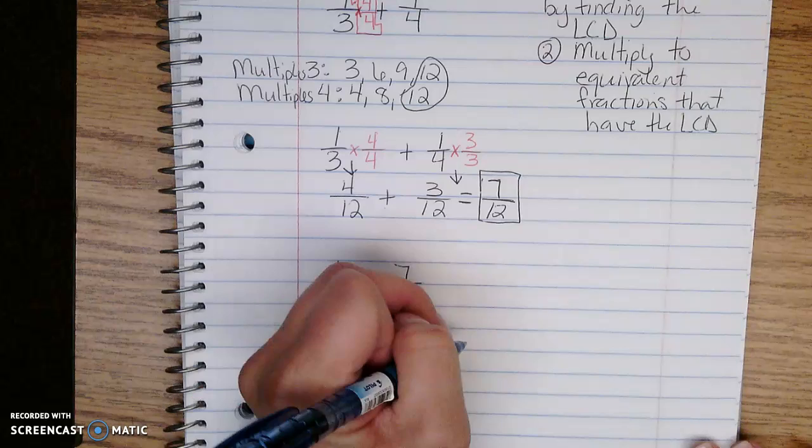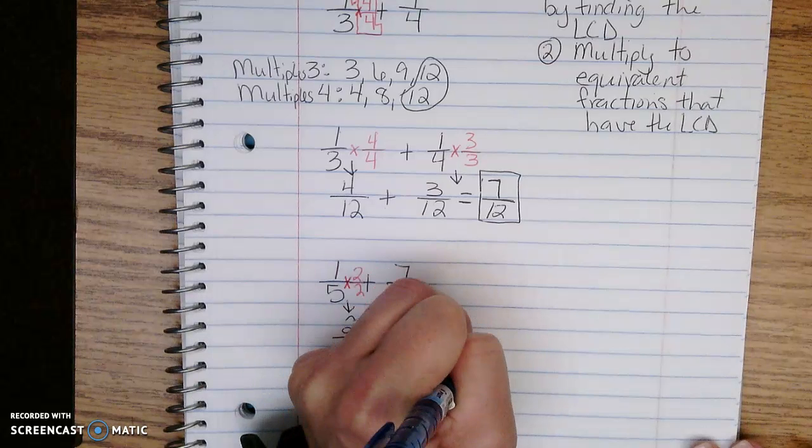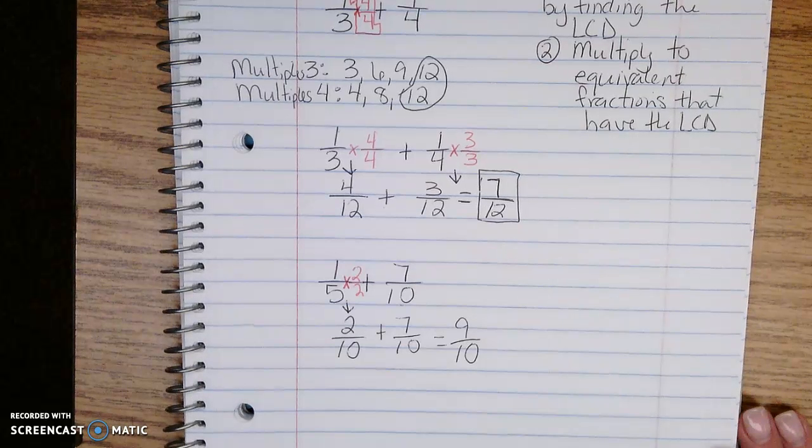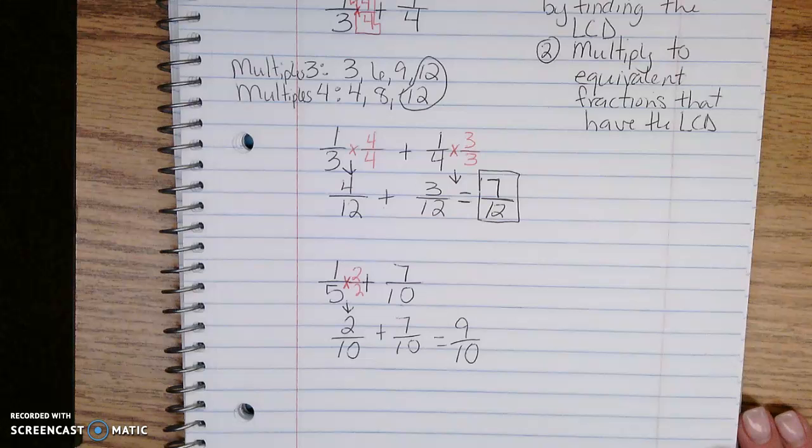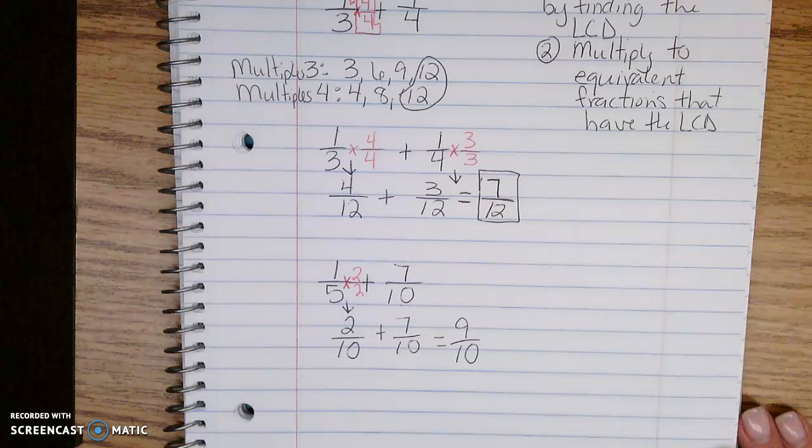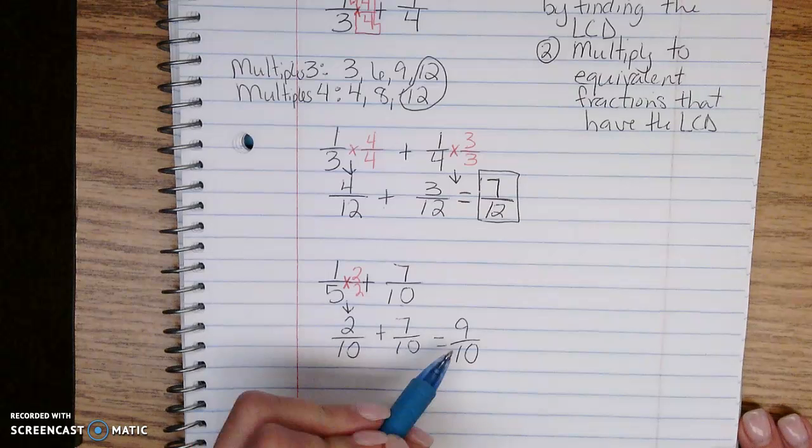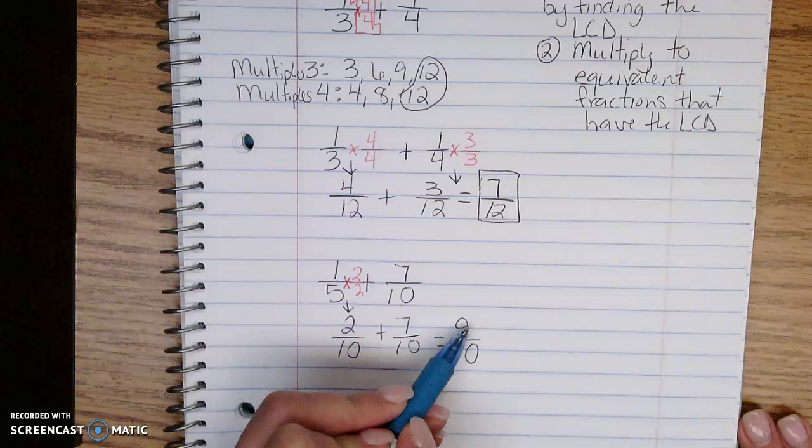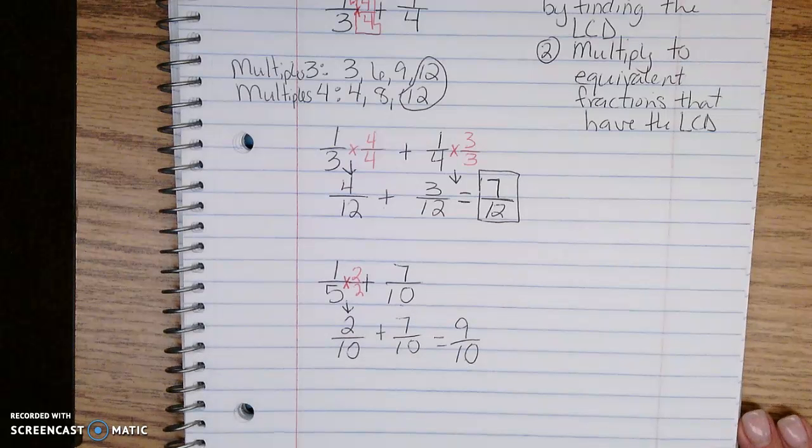2 plus 7 is 9, and my denominator slides over. That's 10. 9/10 is my answer. I know this is already simplified because I always have to check. I know this is simplified because my fraction is in counting order. It goes 9, 10. That's called counting order.